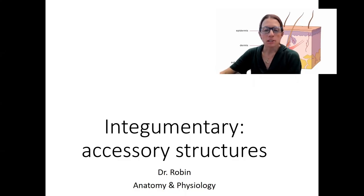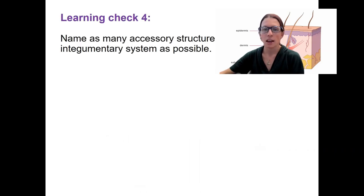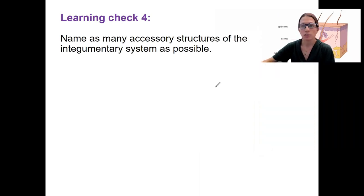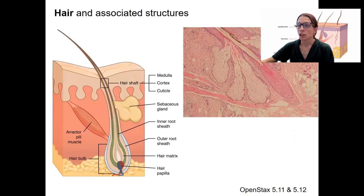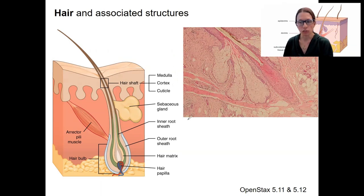Continuing on, I'm going to talk about the accessory structures, also called the appendages of the integumentary system — so extra stuff. I already mentioned some of these briefly. I want to start with a learning check and think of as many as you can without looking things up. I'll go through them in this video, though not in the same detail your book does. I've got one learning outcome for all of these various structures.